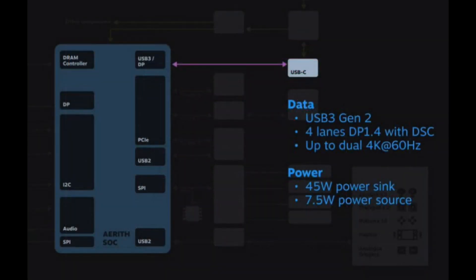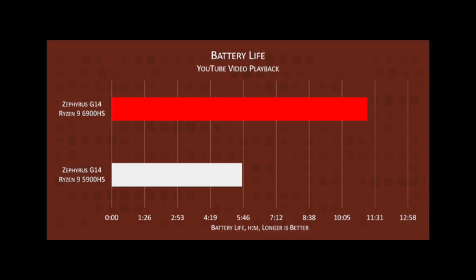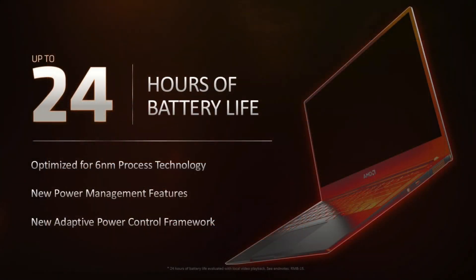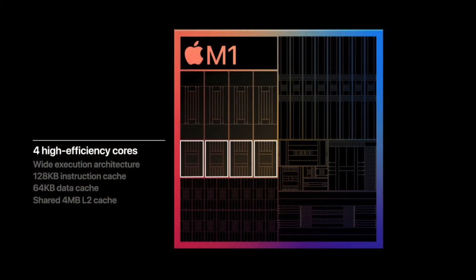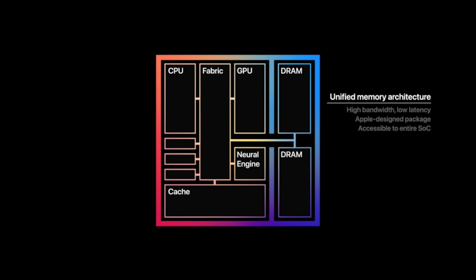Another improvement is the Infinity Fabric bus. The V3 IF dramatically reduced standby and low-load current. As a result, Rembrandt laptops almost doubled the web video playback time. So you get the idea — power management has higher priority than the efficiency core. It only matters when the fabric and power management have almost no room for improvement.